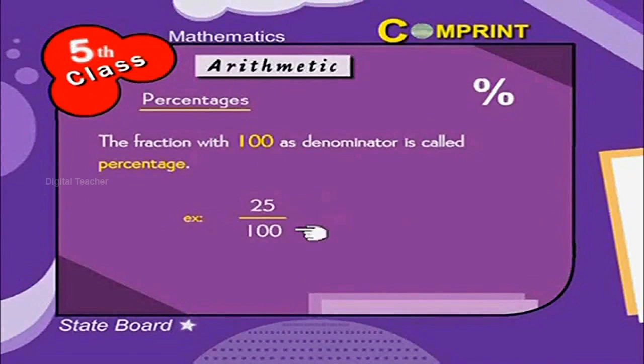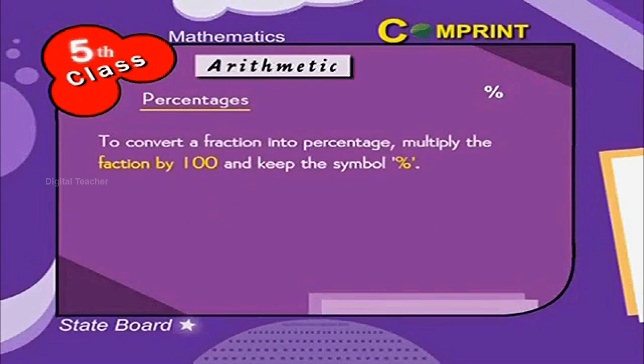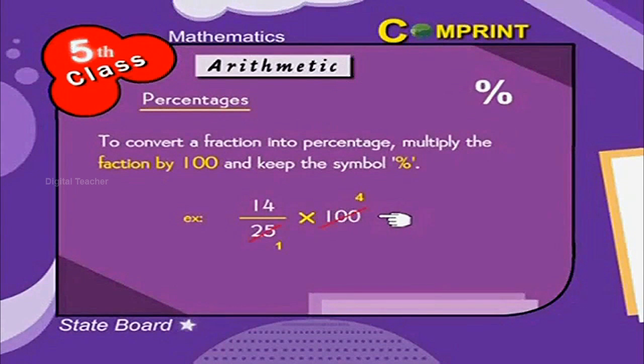For example, 25 by 100 is equal to 25%. To convert a fraction into percentage, multiply the fraction by 100 and keep the symbol of percentage. For example, 14 by 25. This can be written as 14 by 25 into 100. 25 4s are 100, 14 4s are 56%.